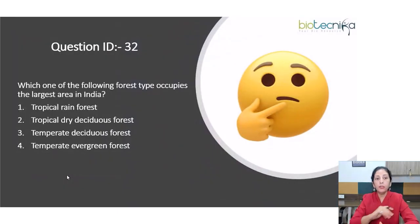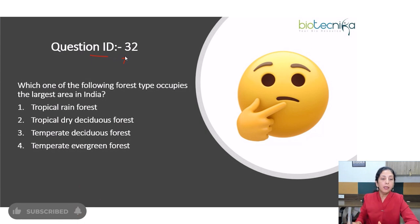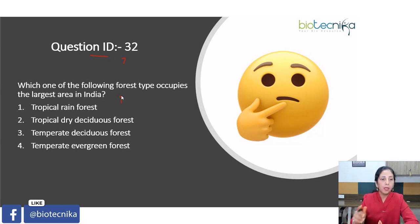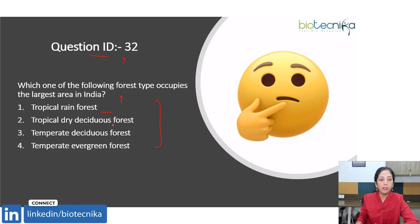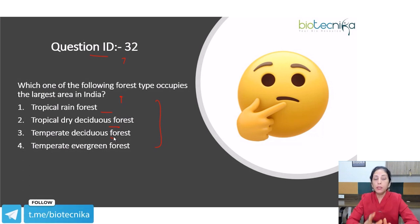Let us get started. The first question with question ID number 32 — this question is simple. It is about the forest type which occupies the largest area in India. Four options have been given: tropical rainforest, tropical dry deciduous forest, temperate deciduous forest, and temperate evergreen forest.